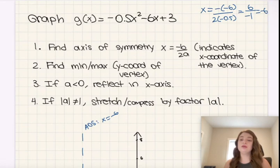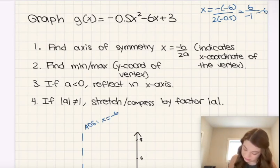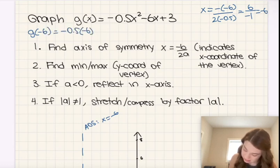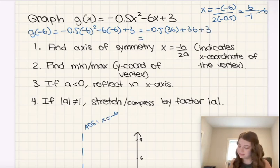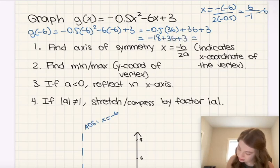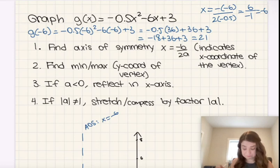Now what I need to do is I need to plug negative 6 in for x and solve for g of x, or y, in order to find the y-coordinate, or g of x-coordinate, of our vertex. So let's do that. g of negative 6 is equal to negative 0.5 times negative 6 squared minus 6 times negative 6 plus 3, which is equal to negative 0.5 times 36 plus 36 plus 3. Let's see, 36 times negative 0.5, that's going to be negative 18 plus 36 plus 3, and that's going to be 18 plus 3, 21.